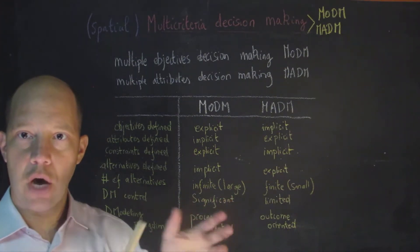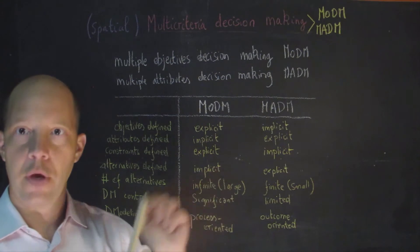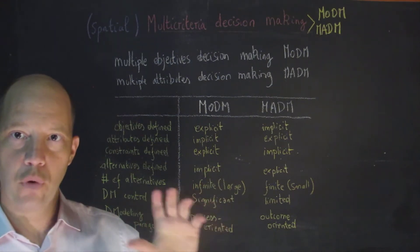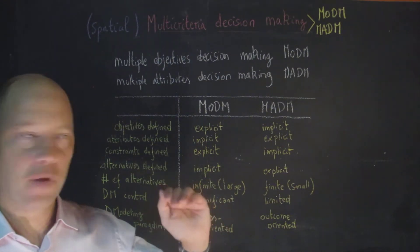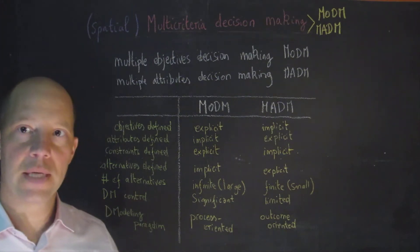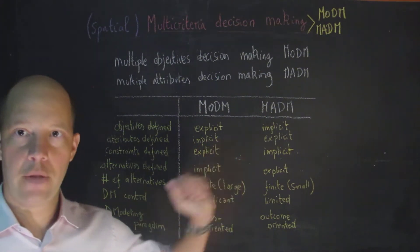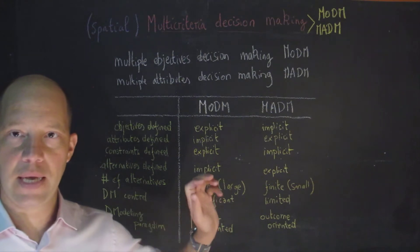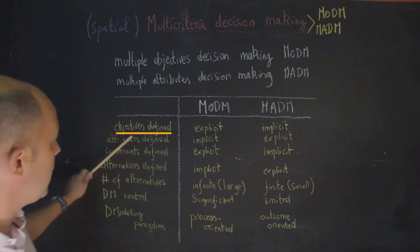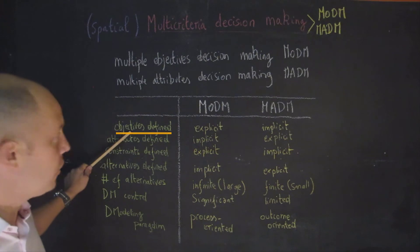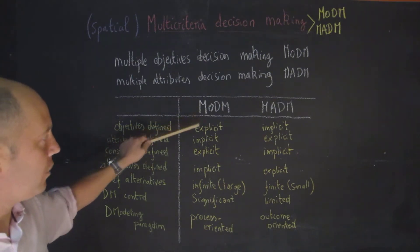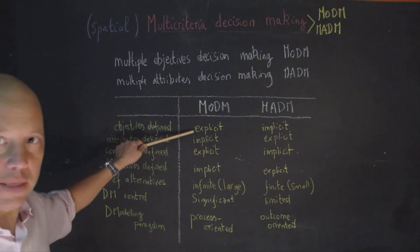It is not uncommon in spatial optimization to have multiple objectives. Let's look at the different components of a decision-making process for the MODM and the MADM. The first component is: are the objectives clearly defined? In the case of multiple objective decision-making, those are explicitly defined.